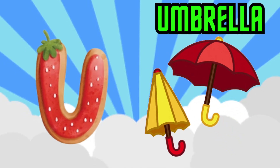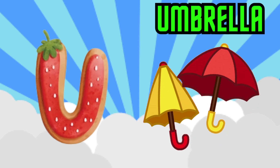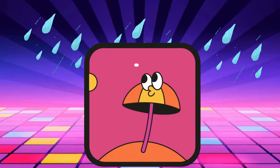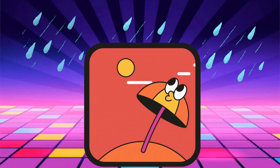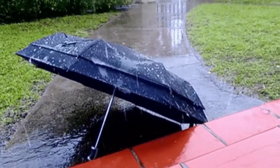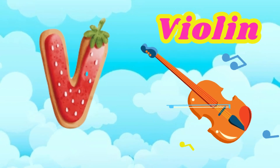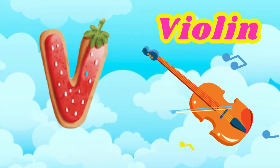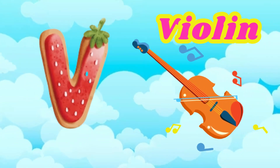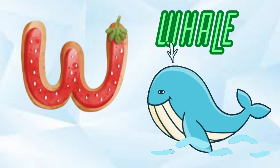U is for Umbrella. U-U-Umbrella, U-Umbrella. V is for Violin. V-V-Violin, V-Violin.